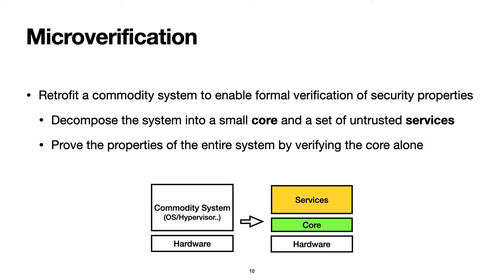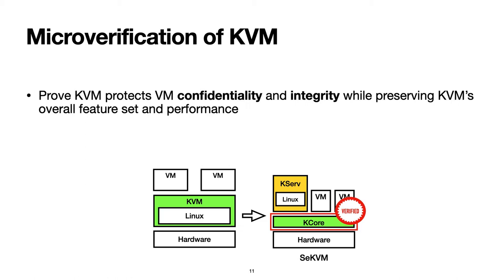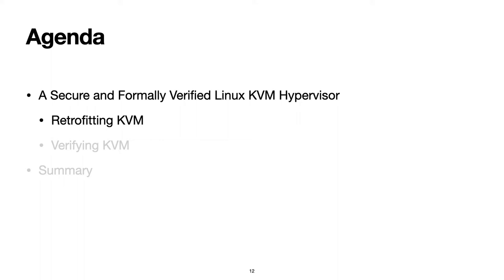Microverification reduces the proof effort by retrofitting a commodity system into a small core and a set of untrusted services, so that it is possible to prove properties of the entire system by verifying the core alone. We have applied microverification to KVM to verify for the first time that a commodity hypervisor protects VM confidentiality and integrity while preserving its overall feature set and performance.